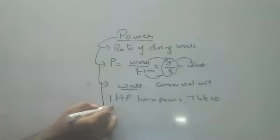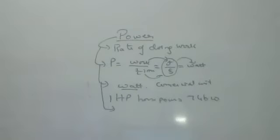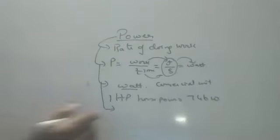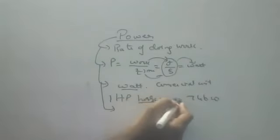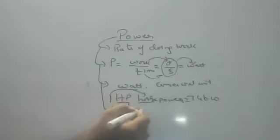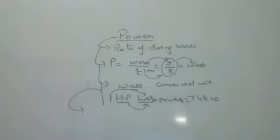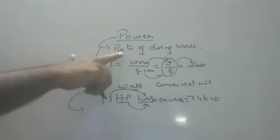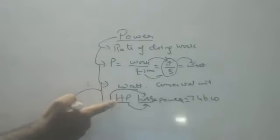So to summarize: the definition of power is the rate of doing work, the formula is work by time, the unit is watts, and the commercial unit is horsepower where one horsepower equals 746 watts. HP stands for horsepower — H-O-R-S-E power.